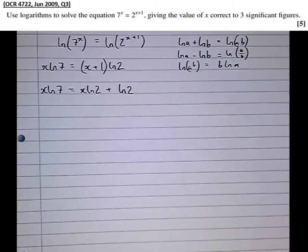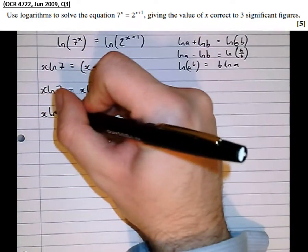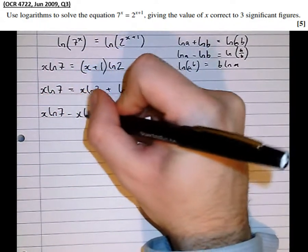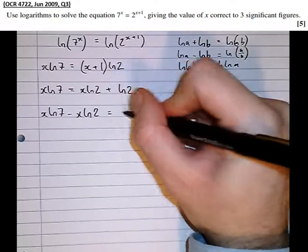And get all the x's on the left hand side, as you do in most equations. So x log 7 take x log 2 equals log 2.